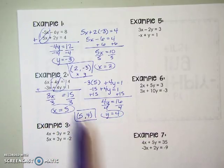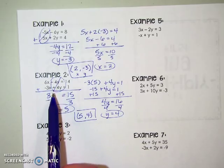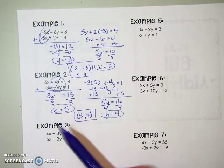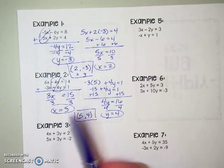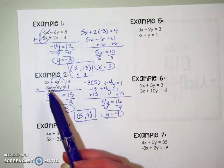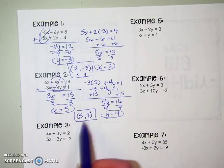Sometimes you don't have variables that are X's and Y's — sometimes you have A and B or any variables. You just put them in alphabetical order.